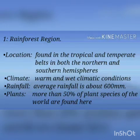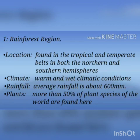Location: the rain forest region is found in the tropical and temperate belts in both the northern and southern hemispheres. Climate: this region is characterized by warm and wet climatic conditions. Rainfall: average rainfall is about 600 mm annually. Plants: more than 50% of plant species of the world are found in the rainforest region.